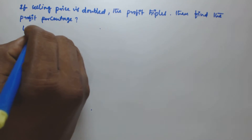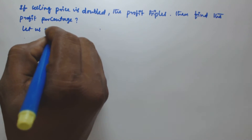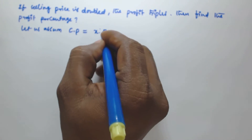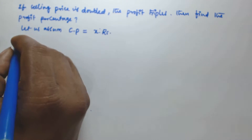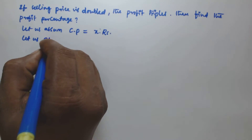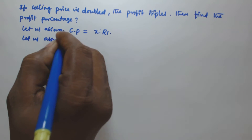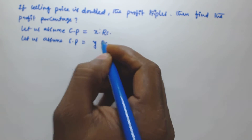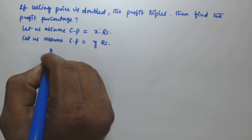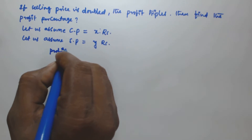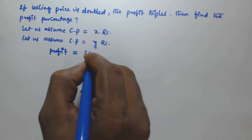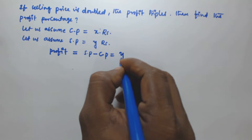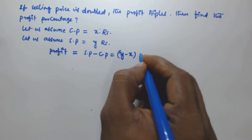Let us assume the cost price is equal to x rupees, and let us also assume the selling price is equal to y rupees. So in that case, the profit is going to be selling price minus cost price, that is y minus x rupees.